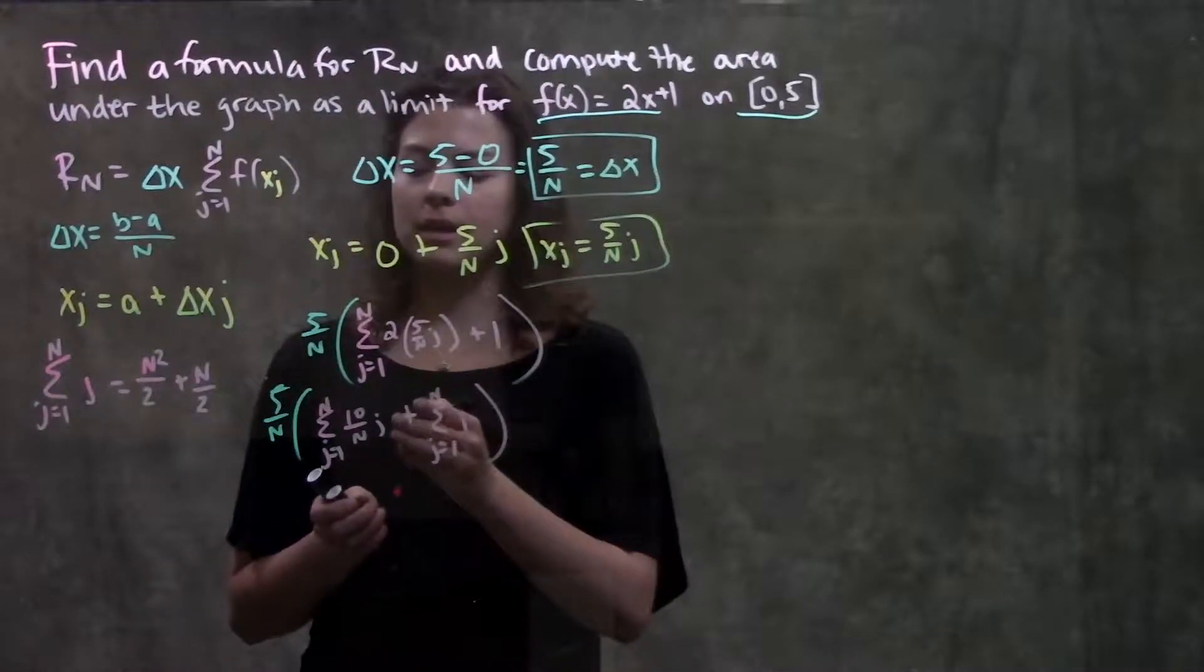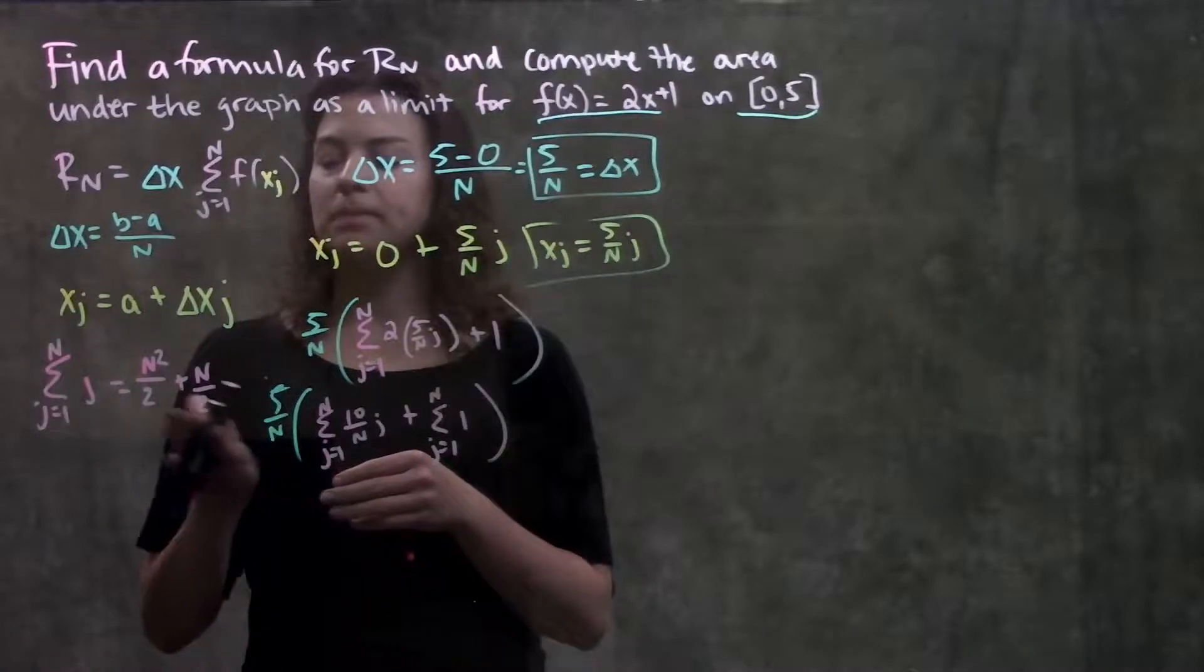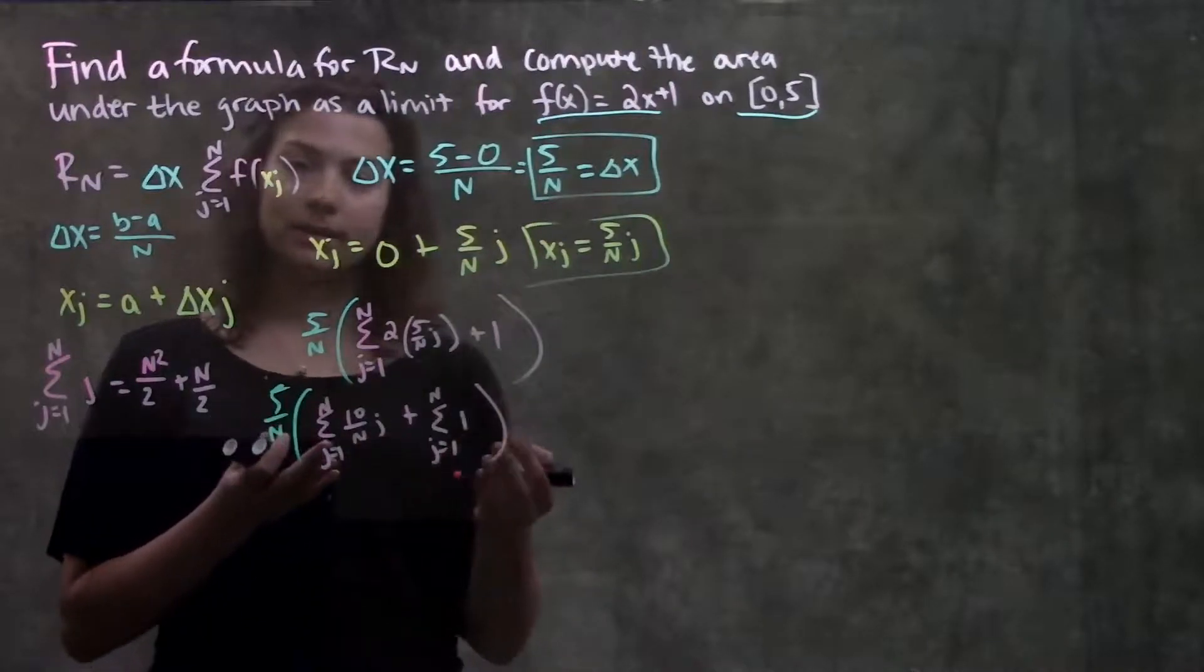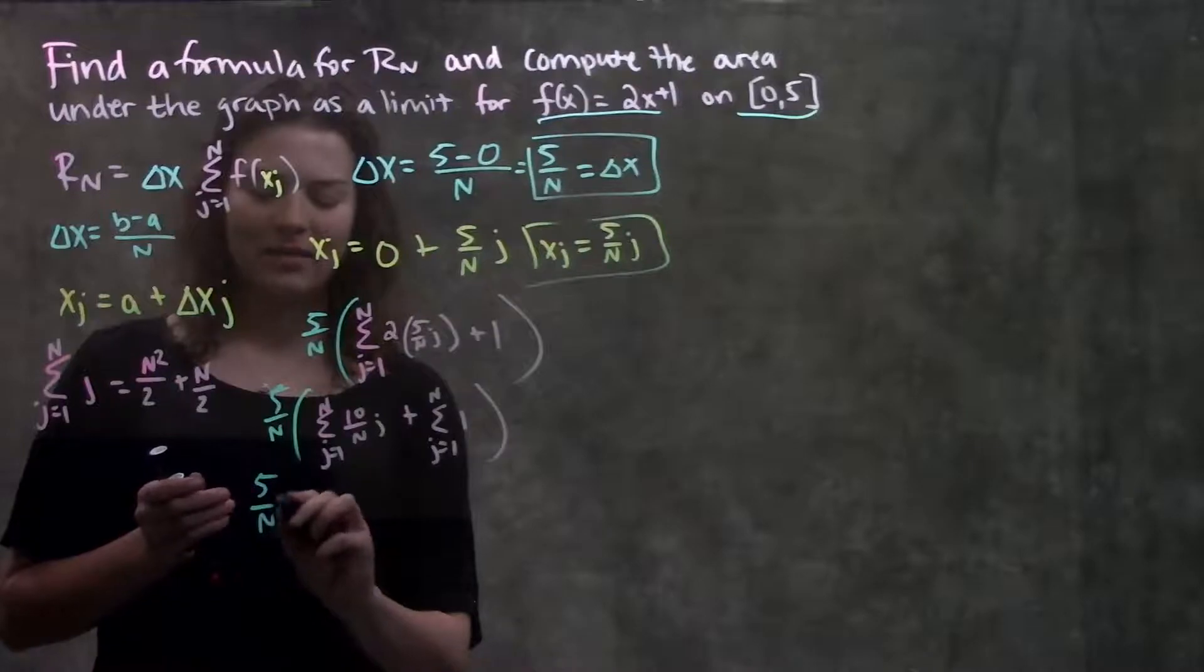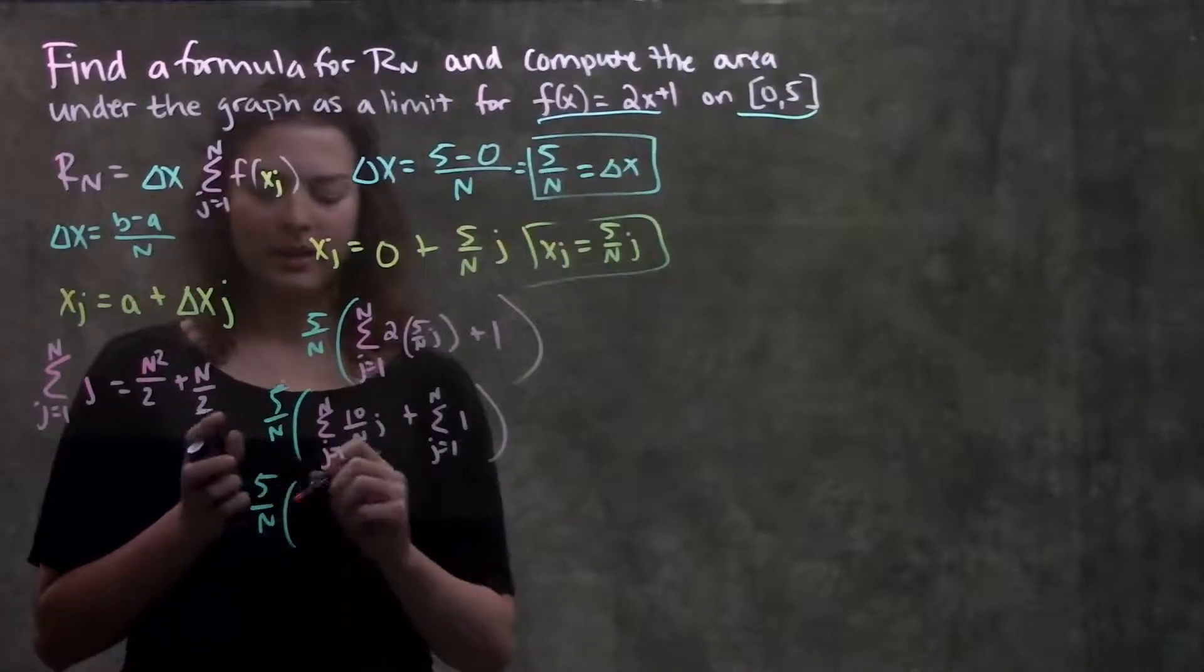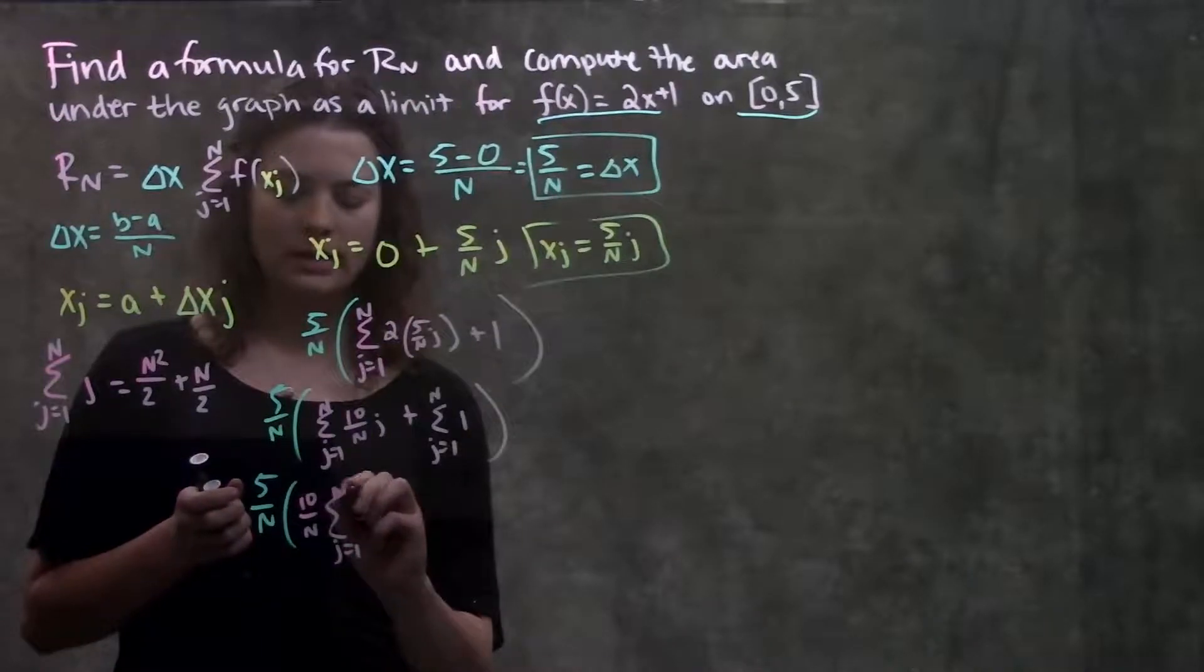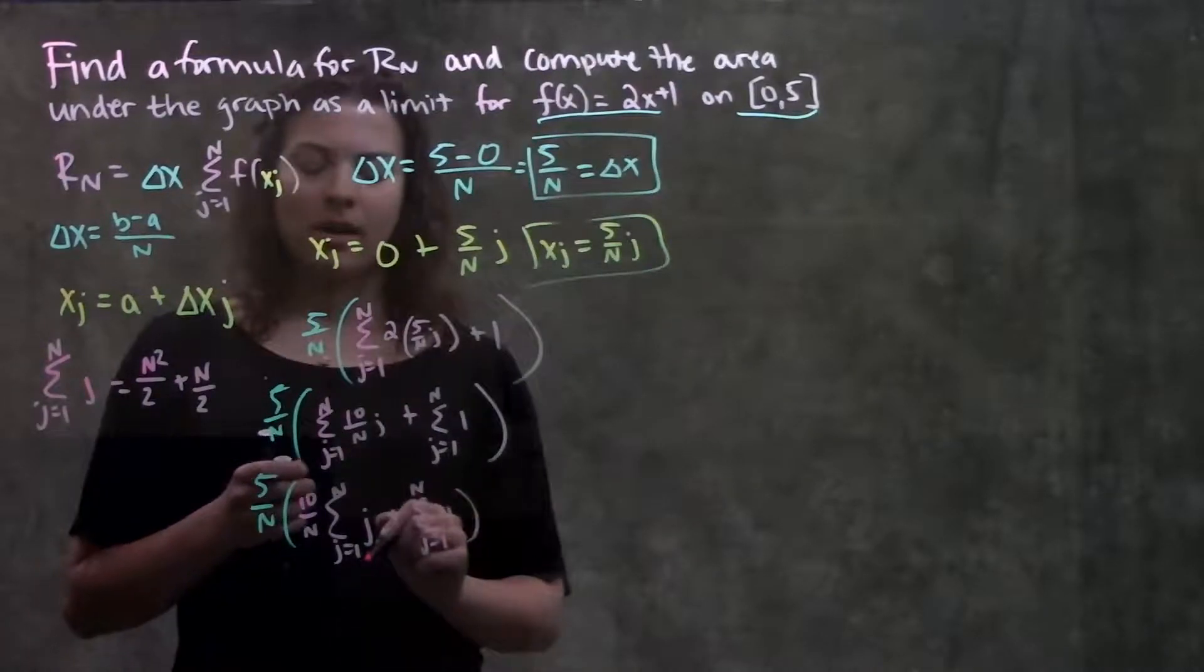And, from here, I'm going to try to make this part match my formula, so that I can just plug in this formula to find the area of this section, or of both sections. So, when I do that, I'm going to take out this constant here. So, I have 10 over n, times from j equals 1 to n of j, plus this summation.